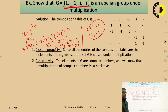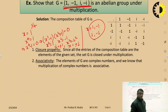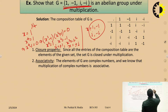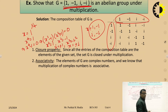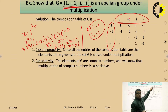To show G = {1, −1, i, −i} is an abelian group, we must show five properties: closure property, associative property, identity property, inverse property, and commutative property. First, we make a composition table with elements 1, −1, i, −i in both rows and columns, under the operation multiplication.